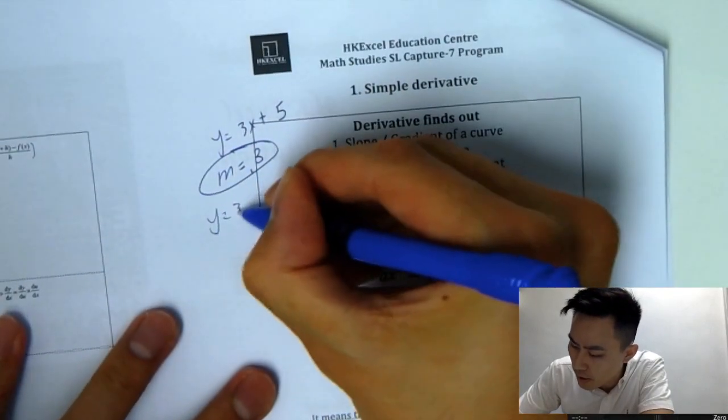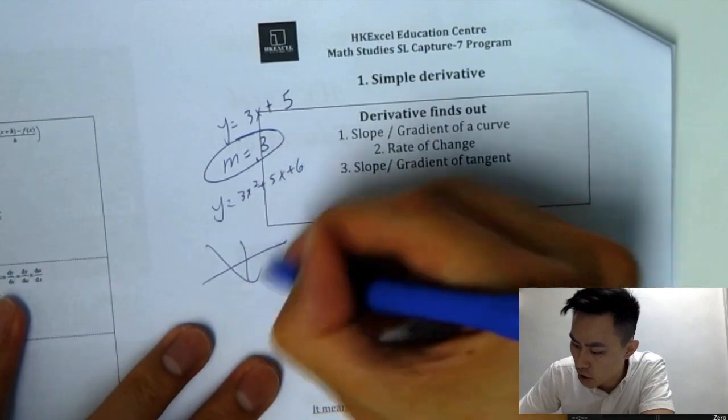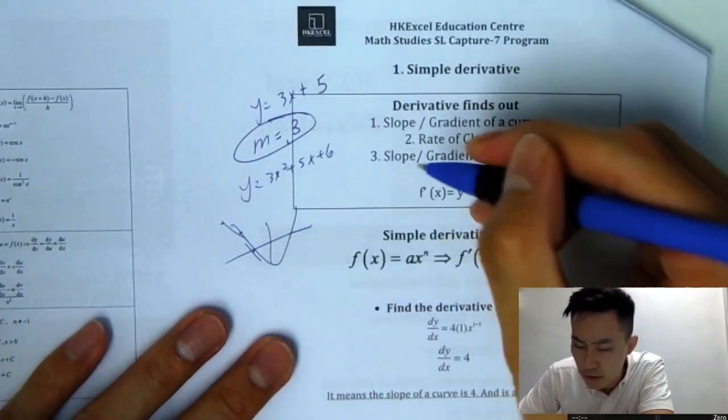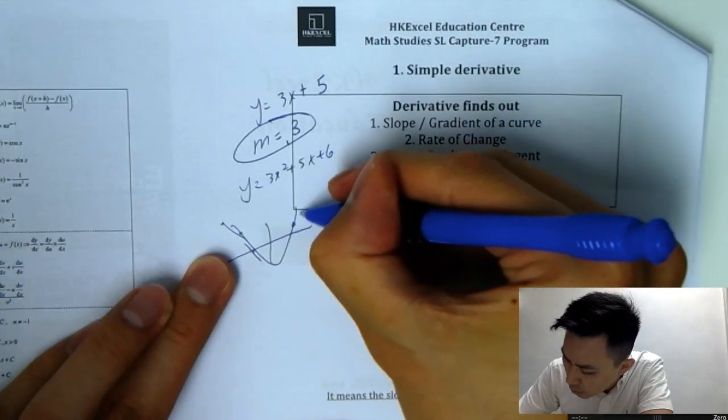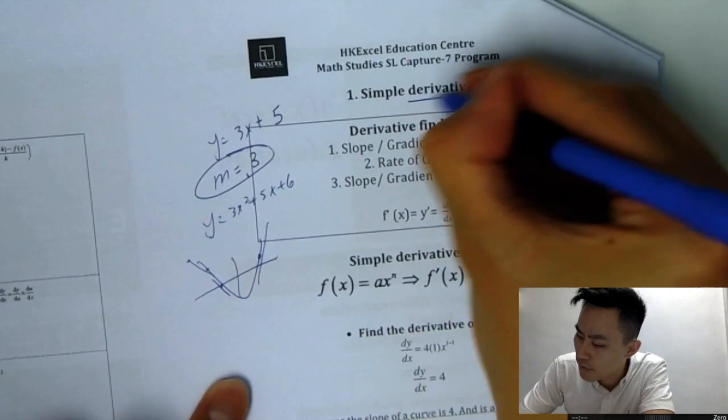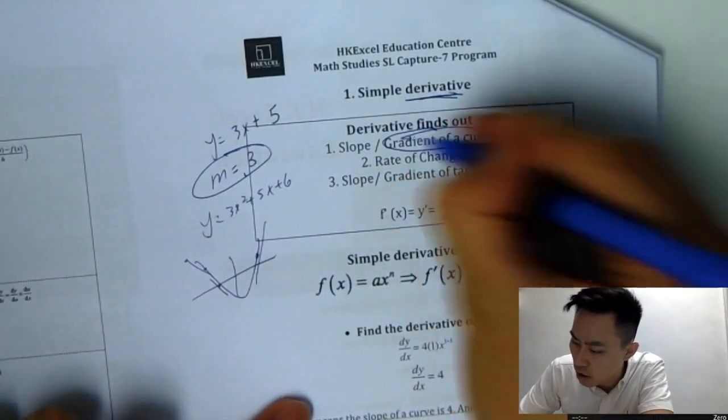But what if I give you y equal to 3x squared plus 5x plus 6? So we'll have a curve. So at every point, we'll have different slope. So this is downward sloping. And at this point, we'll have upward sloping. So that's the reason why we need to learn derivative. Or you can say differentiation.